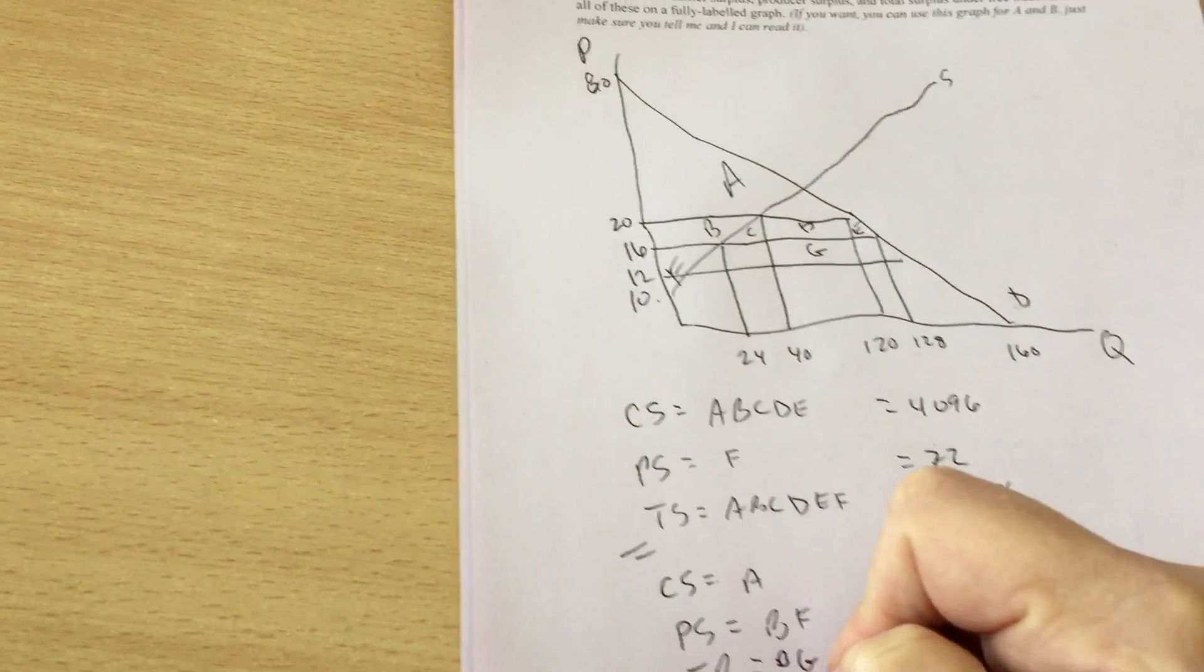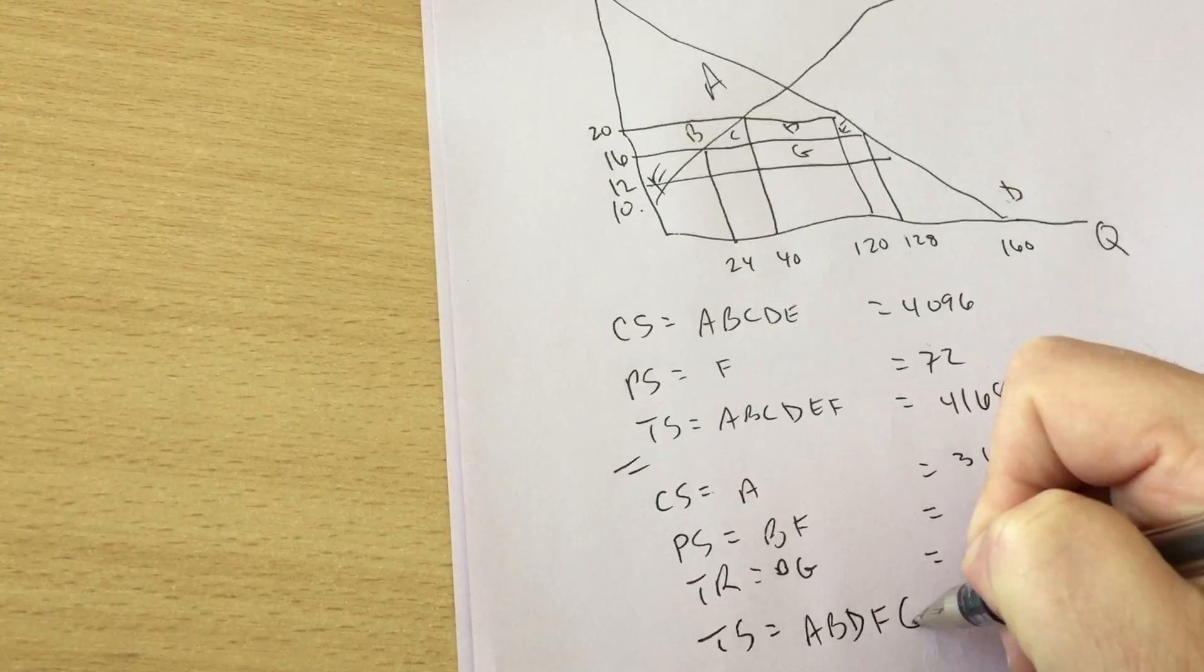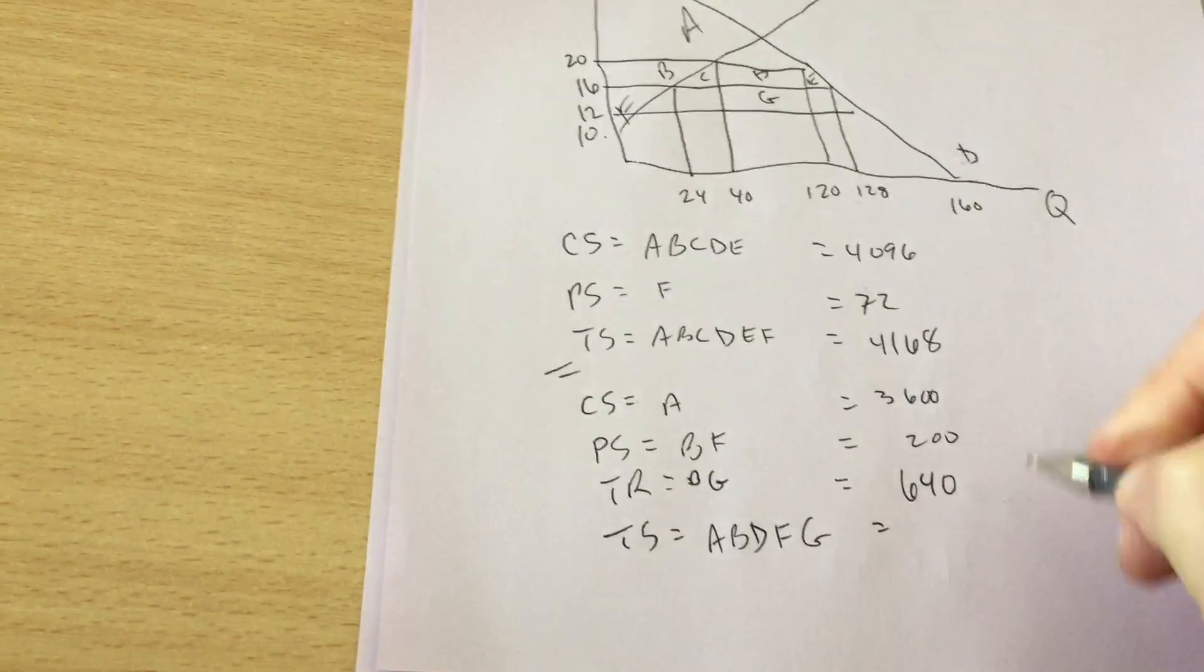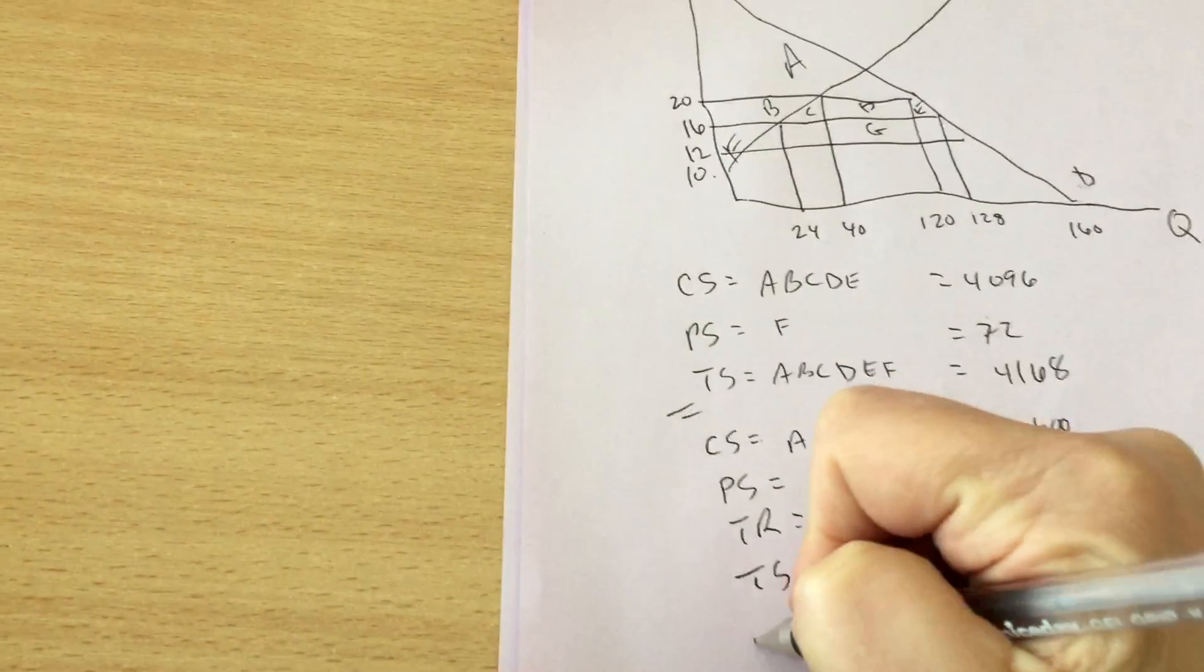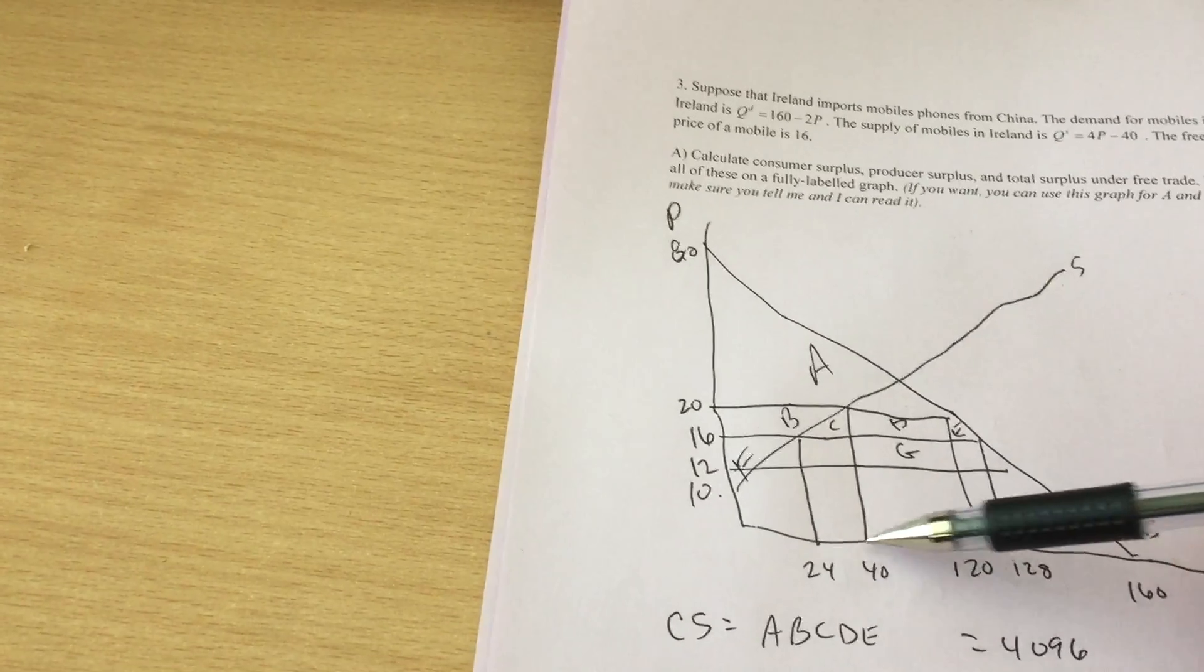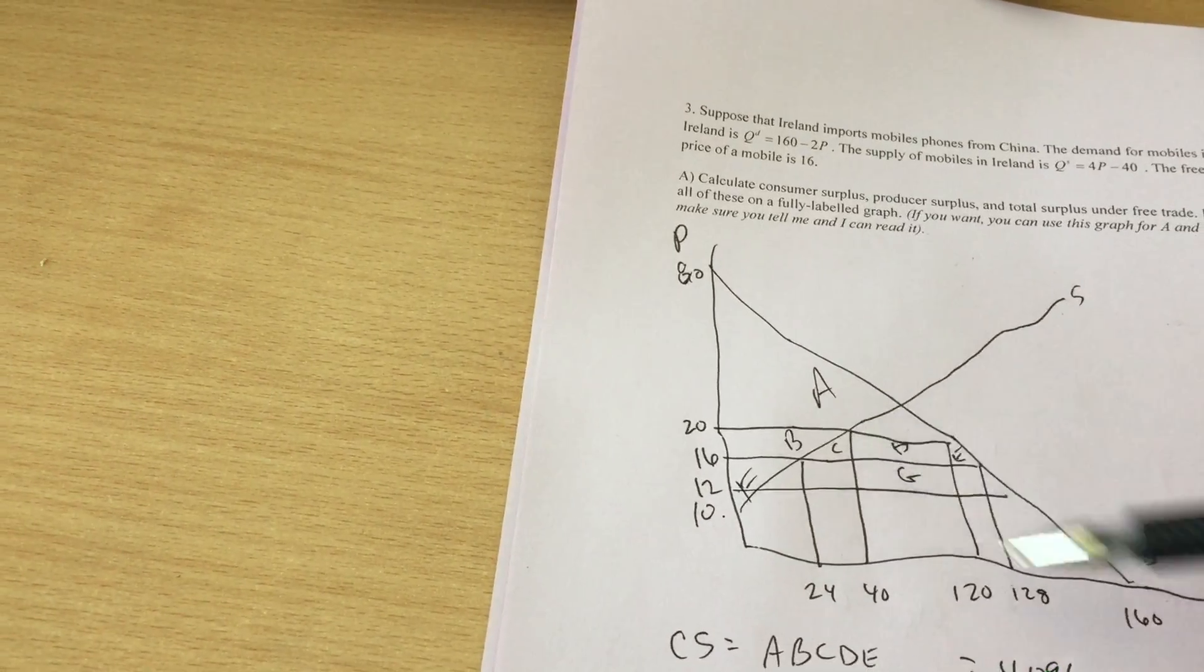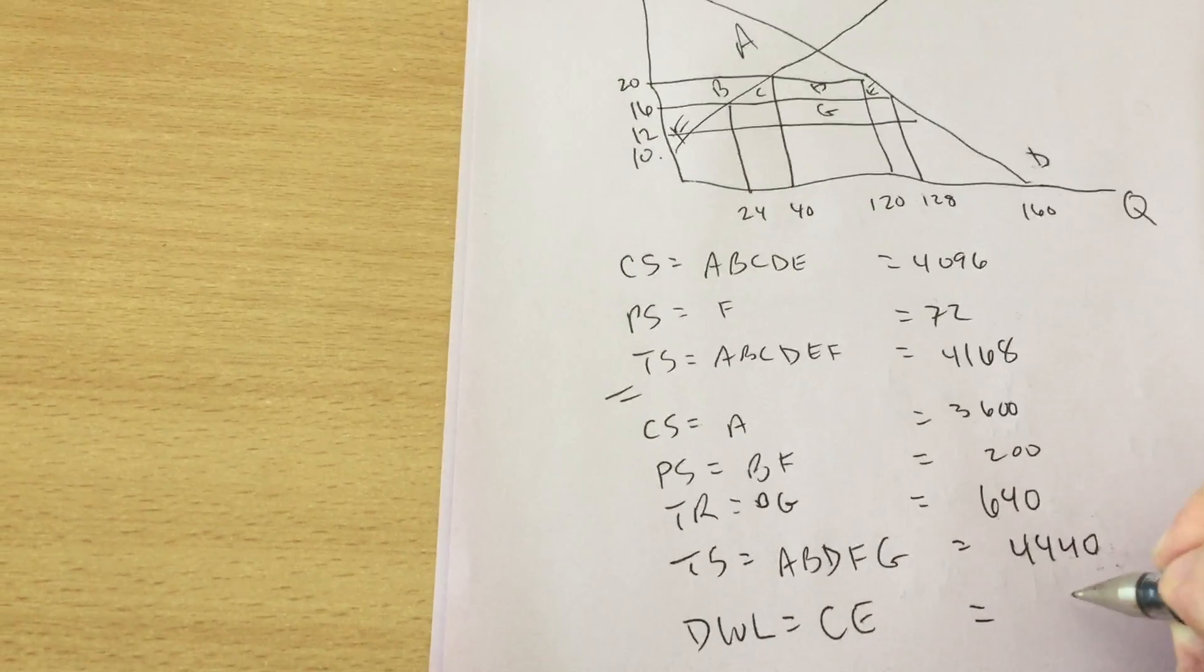And then total surplus is those added together A, B, D, F, and G for a grand total of 4440. Where did C and E go? Those are deadweight loss. One half of a base of 40 minus 24 times the height of 4 plus a base of 8 times the height of 4 divided by 2 for a grand total of 48. That's deadweight loss.